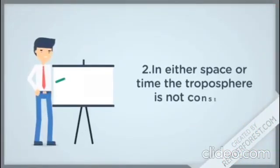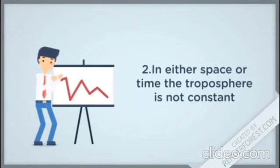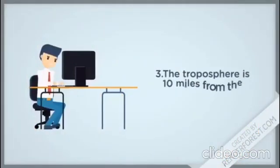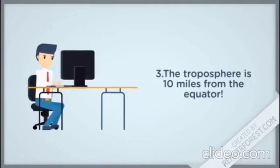In either space or time, the troposphere is not constant. The troposphere is 10 miles from the equator.